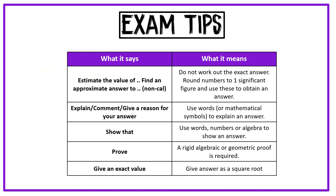It is always important to understand what the question is asking you to do. If it says 'estimate the value of' or 'find an approximate answer to', do not work out the exact answer — round the numbers to one significant figure and use those in your calculations. If it says 'explain', 'comment', or 'give a reason for your answer', use words to explain. If it says 'show that', use words, numbers, or algebra to show the answer. If it says 'prove', you need to use a rigorous algebraic or geometric proof.